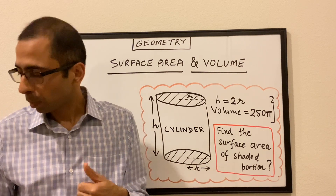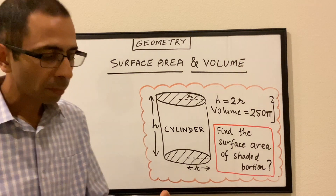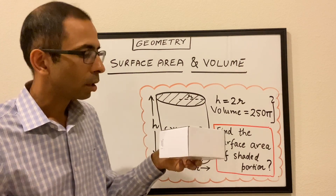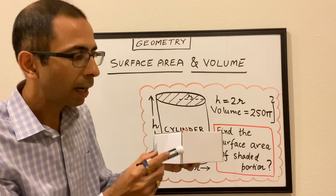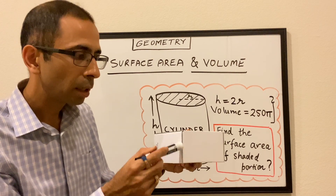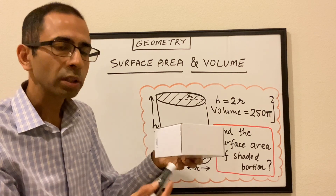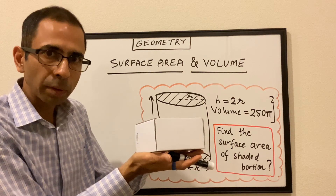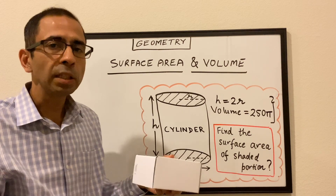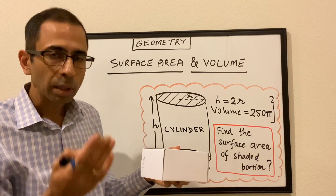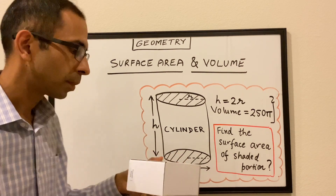Let me take a quick simple example. Let's say that we have a box like this. This box has the length, it has the width, and it has the height as well. The height is the third dimension — that is the one which makes it a box; otherwise it would have been a plain piece of paper. So that's the first thing to understand about the 3D shape: it has three dimensions, and height is the third dimension which makes it 3D.